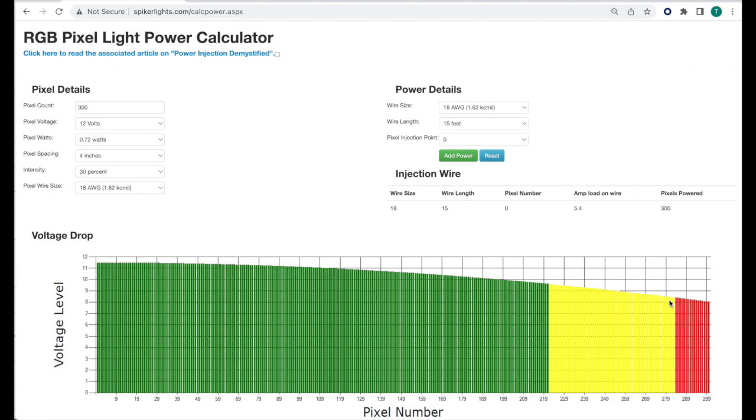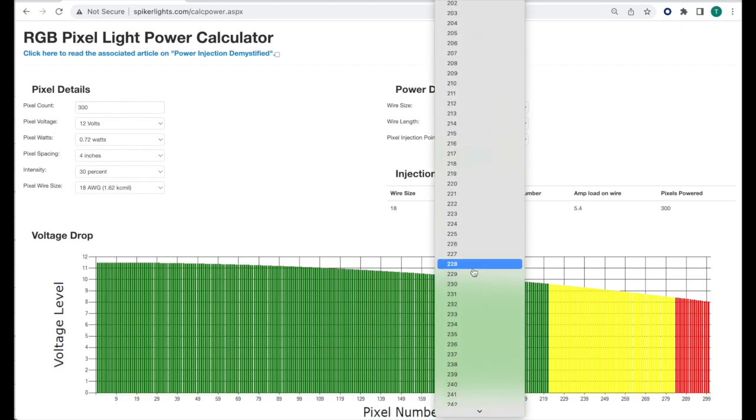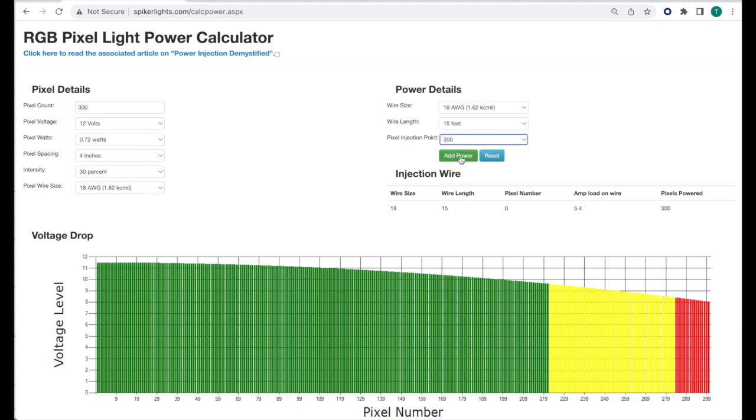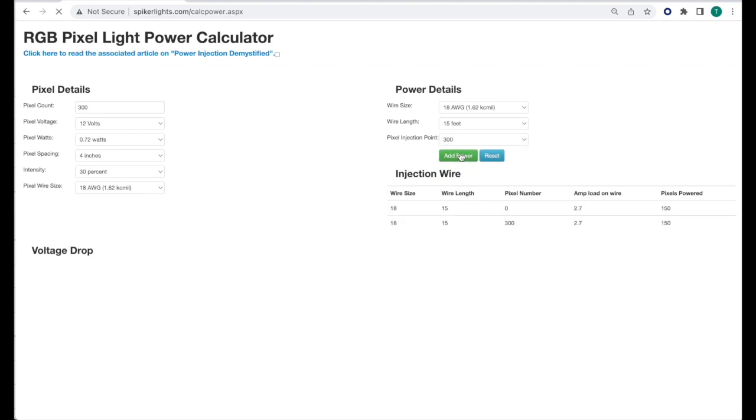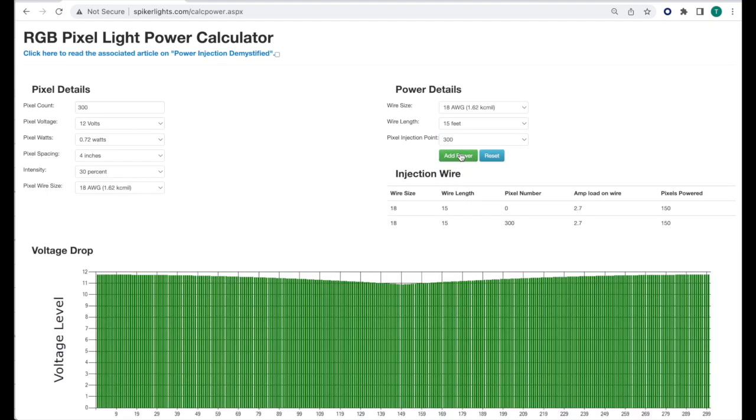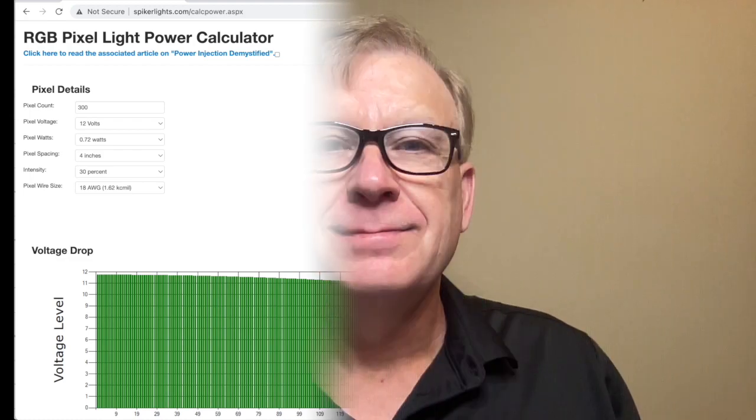It also allows you to specify power injection points. For example, if power injection is added to the last pixel in a string of 300, let's see what happens. So I'm going to go here. I'm going to select the last pixel. I'm going to add the power. Notice that the voltage drop is now acceptable and the graph remains green for all 300 pixels when we added power injection to the last pixel.